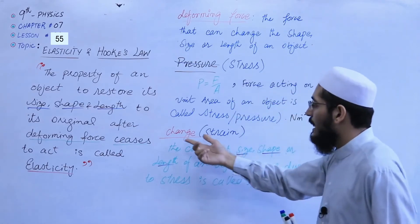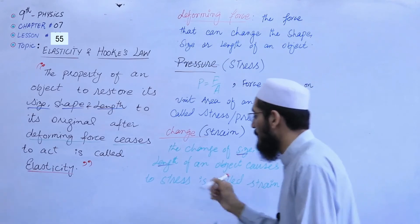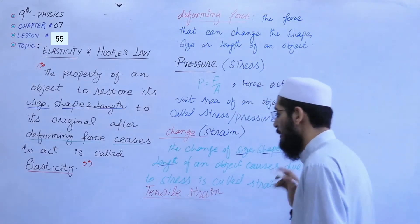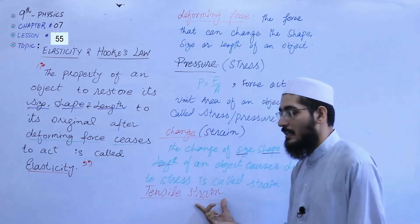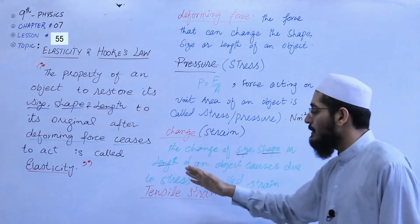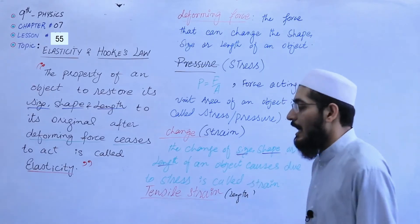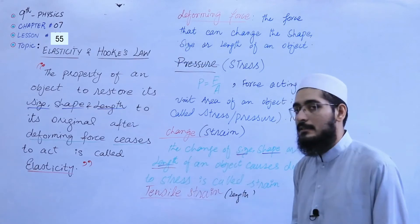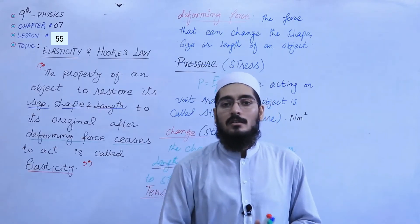We have more specific definitions. One is called tensile strain. Actually, we have three types of changes: size, shape, or length. We specify one — and that is length. Tensile strain is a part of strain, but it is specified with length. So if there is a change in the length of an object due to stress, that strain is called tensile strain.